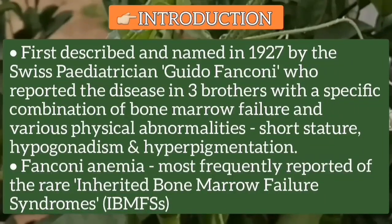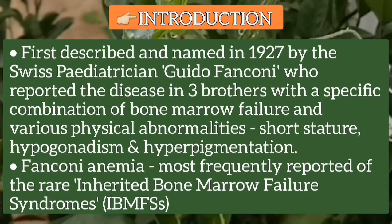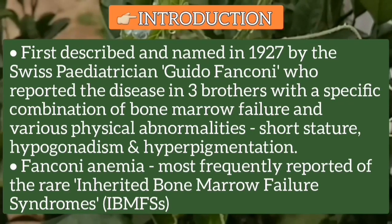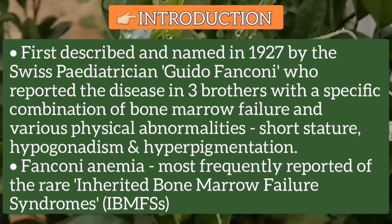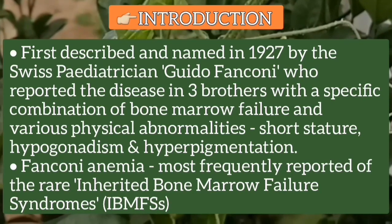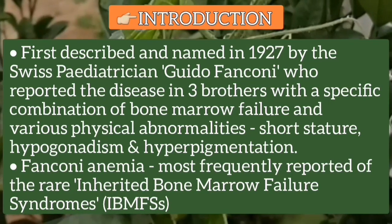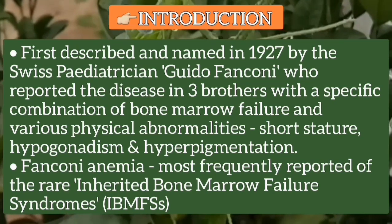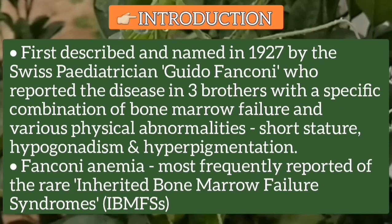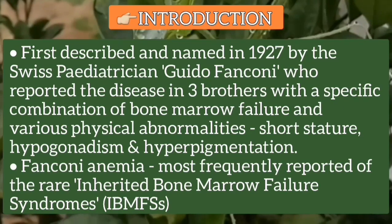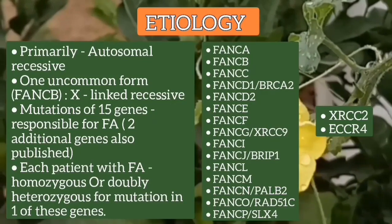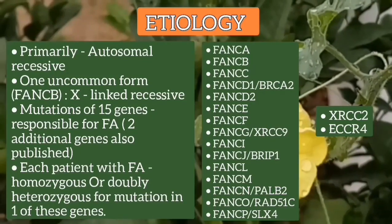Fanconi Anemia was first described and named in 1927 by a Swiss pediatrician Guido Fanconi. He reported the disease in three brothers with a specific combination of bone marrow failure and various physical abnormalities, such as short stature, hypogenesis and hyperpigmentation. Fanconi Anemia is the most frequently reported of the rare inherited bone marrow failure syndromes, and is primarily inherited in an autosomal recessive manner.